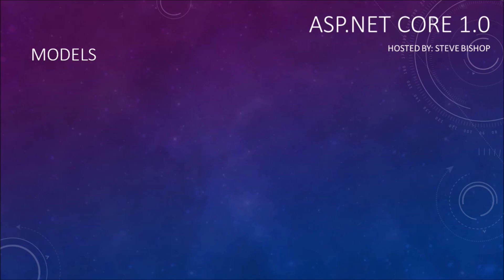Models are a very simple concept — they're just classes that contain the data. This could come in many forms. You could get your data in the form of POCOs, which are just plain old class objects. You could get it from Entity Framework, or possibly even LINQ to SQL, which is pretty much gone from any of the newer applications. You might also get your data from a service, like a web API.